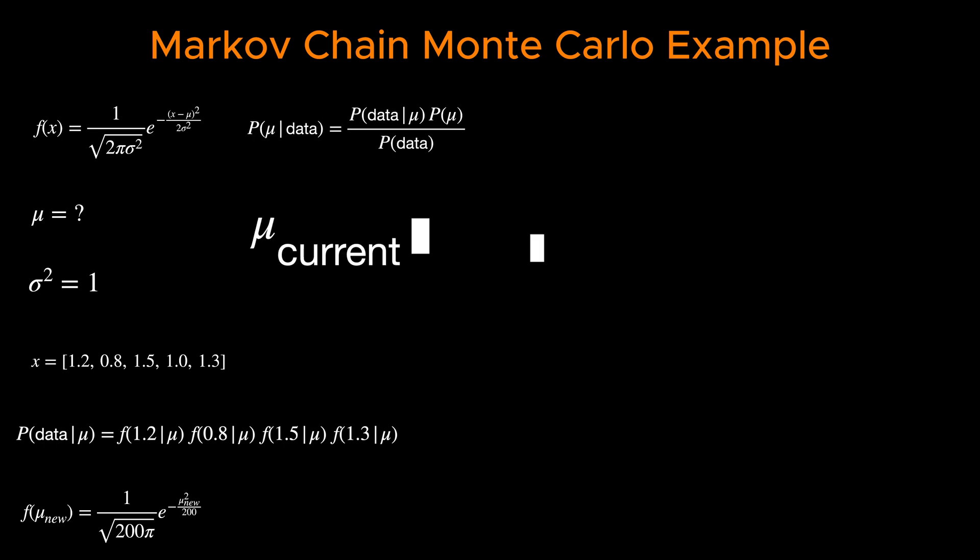Now let's start with an initial value for μ, let's say 0. The next step is to generate a random μ from the assumed distribution. We call this μ_new so that we know it is the new proposed value for μ.